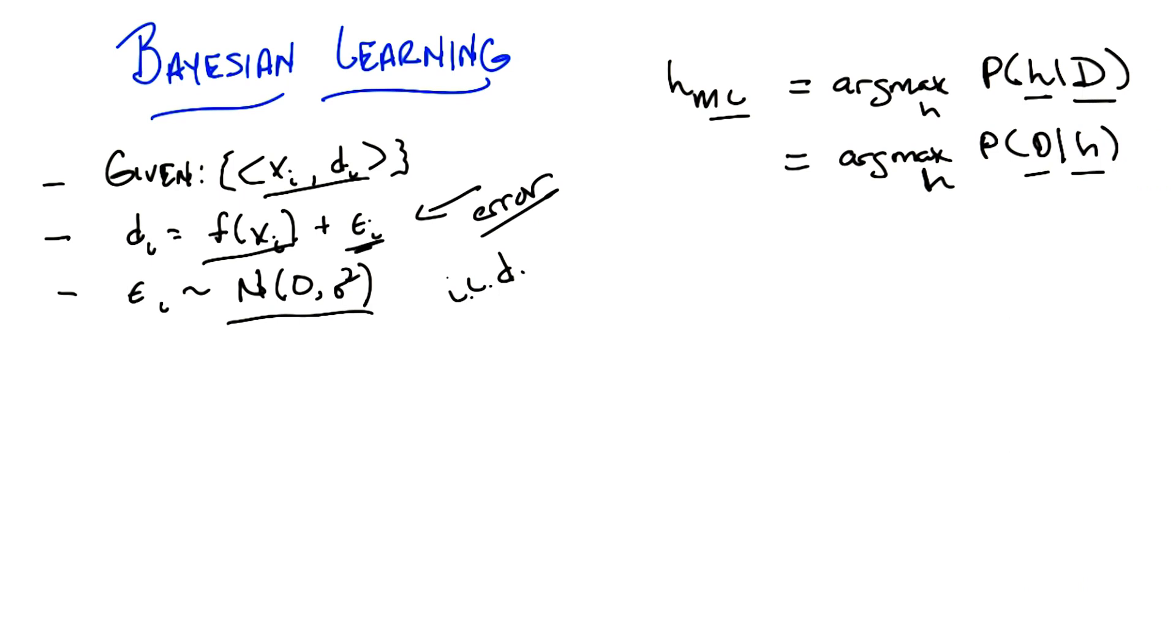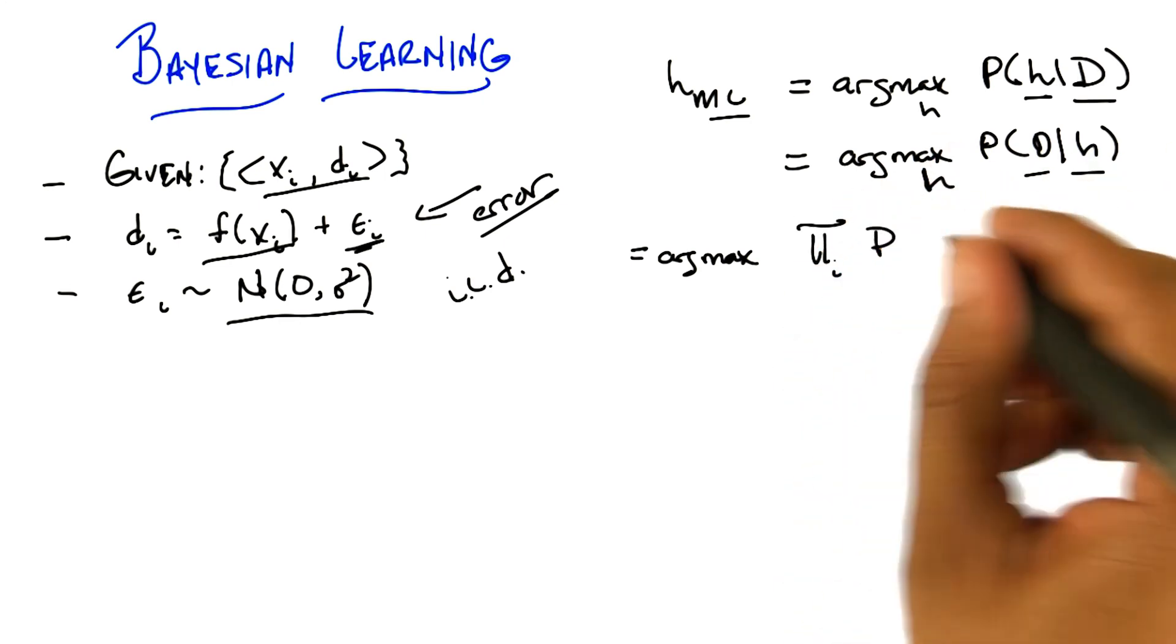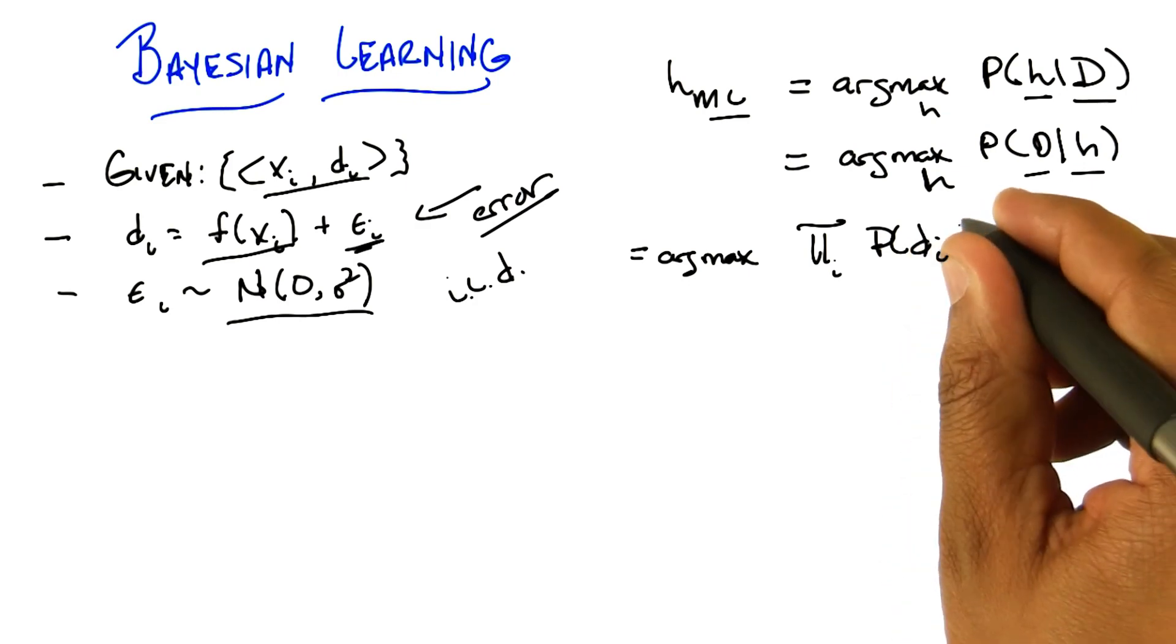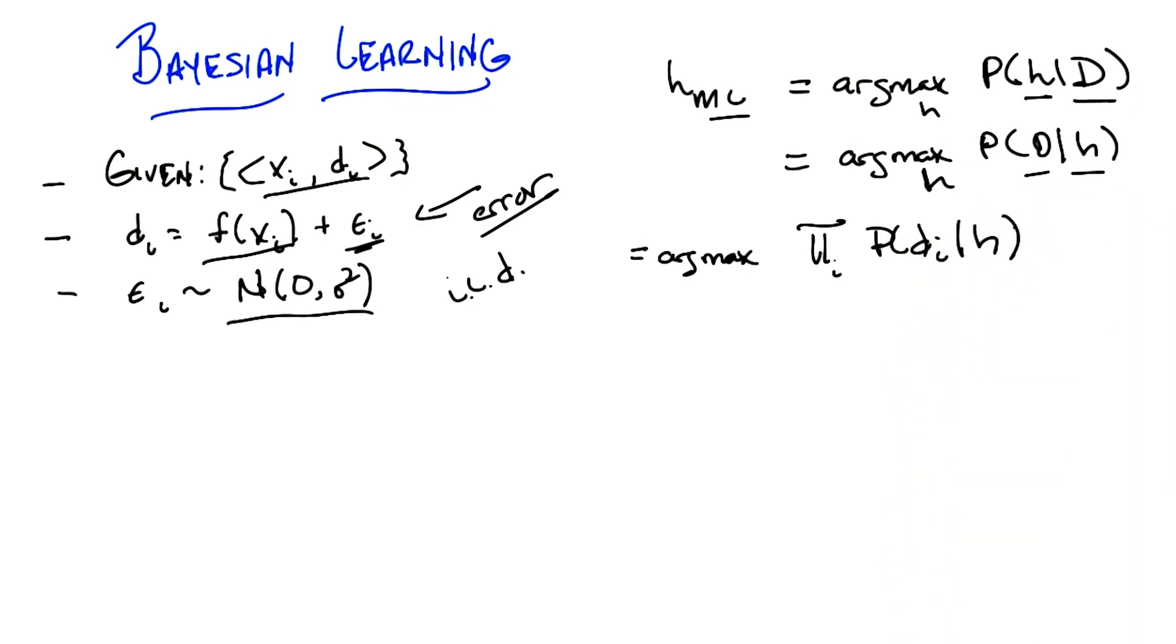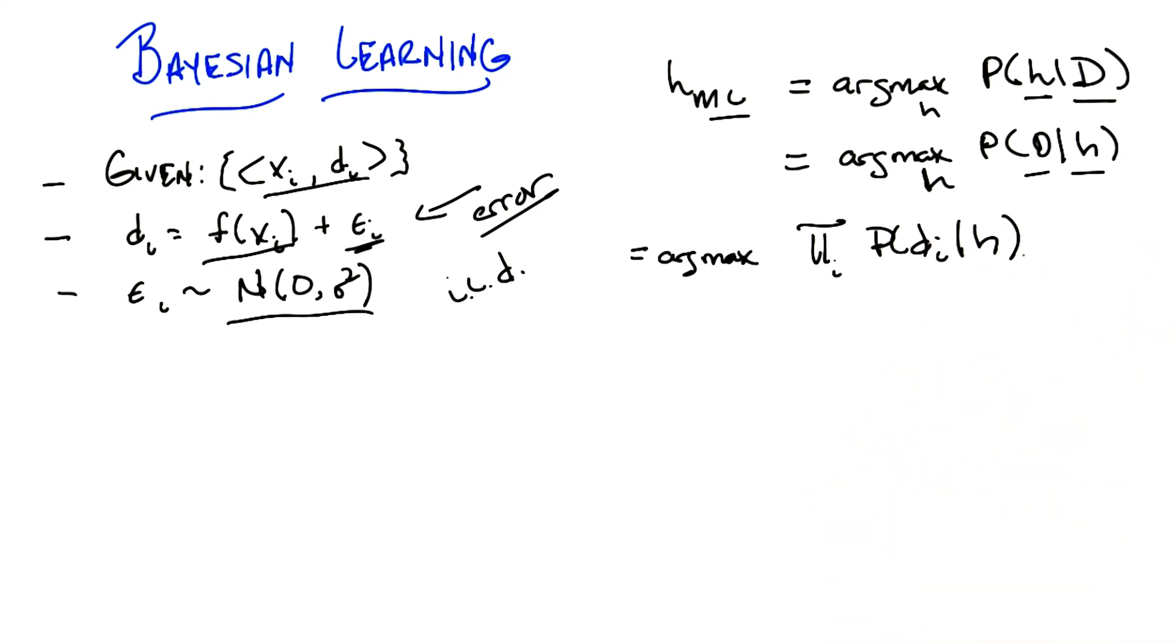That was when we assumed a uniform prior on the hypotheses. Exactly. This is the easiest case to think about, where finding the hypothesis that best fits the data is the same as finding the hypothesis that describes the data the best. So what do you think we should do first? Probably expand the data given the hypothesis. Right. We assumed IID, so we can expand that into the product over all the data elements of the probability of that data element given the hypothesis and x.